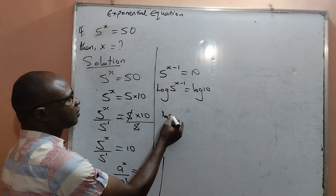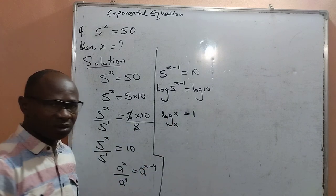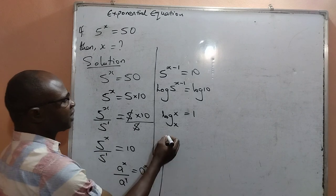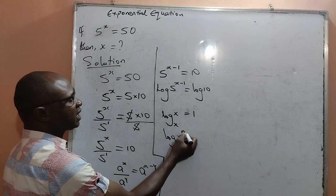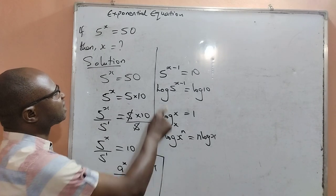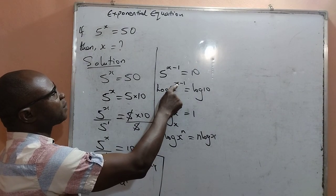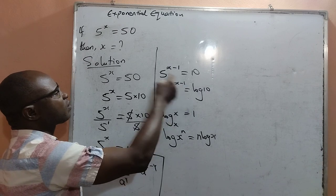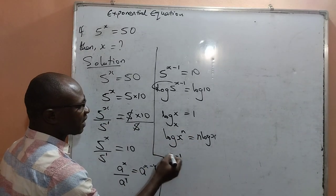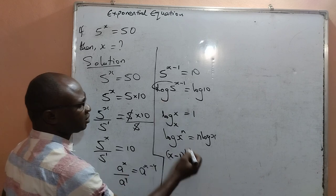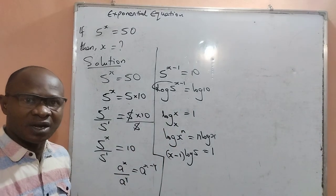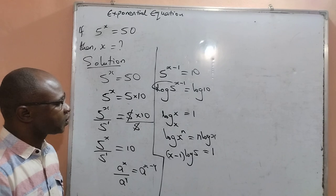Let us look at these laws. If you have the log of x base x, it is equal to 1. What it means here is that log 10 base 10 will give us 1. Also, if you have the log of x raised to the power n, it is equal to n log x. What it also implies is that from here, I got log 5 raised to the power x minus 1. This x minus 1 will now be moved to the front side to be written as x minus 1 multiplying log 5 equal to log 10, which is equal to 1.